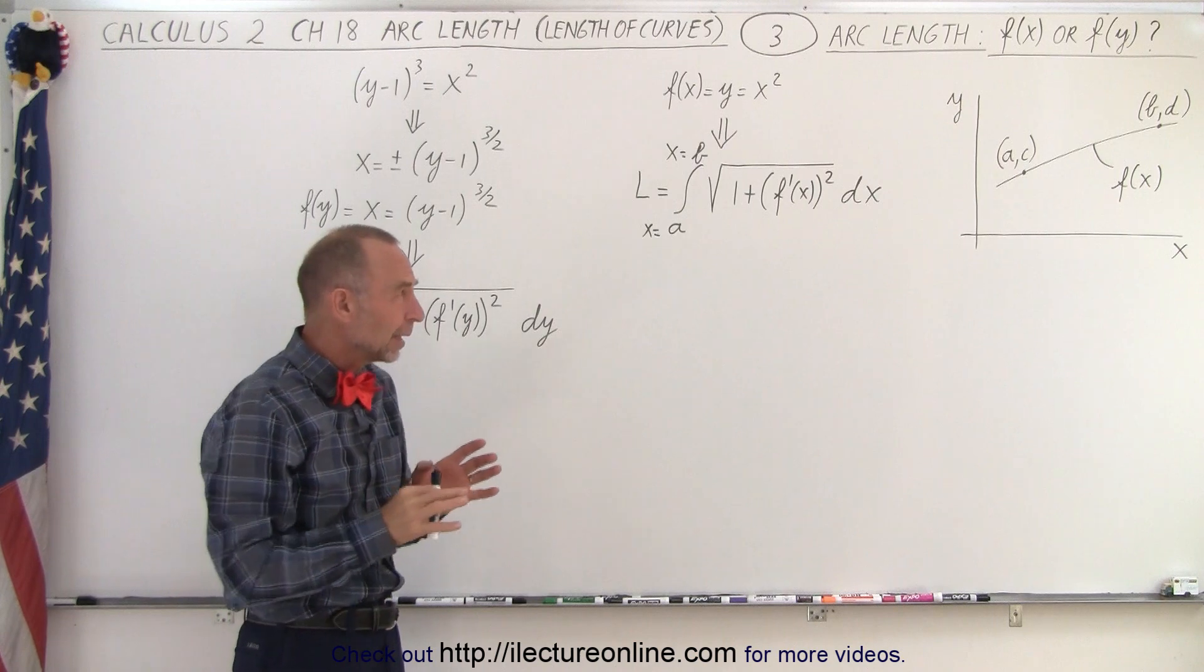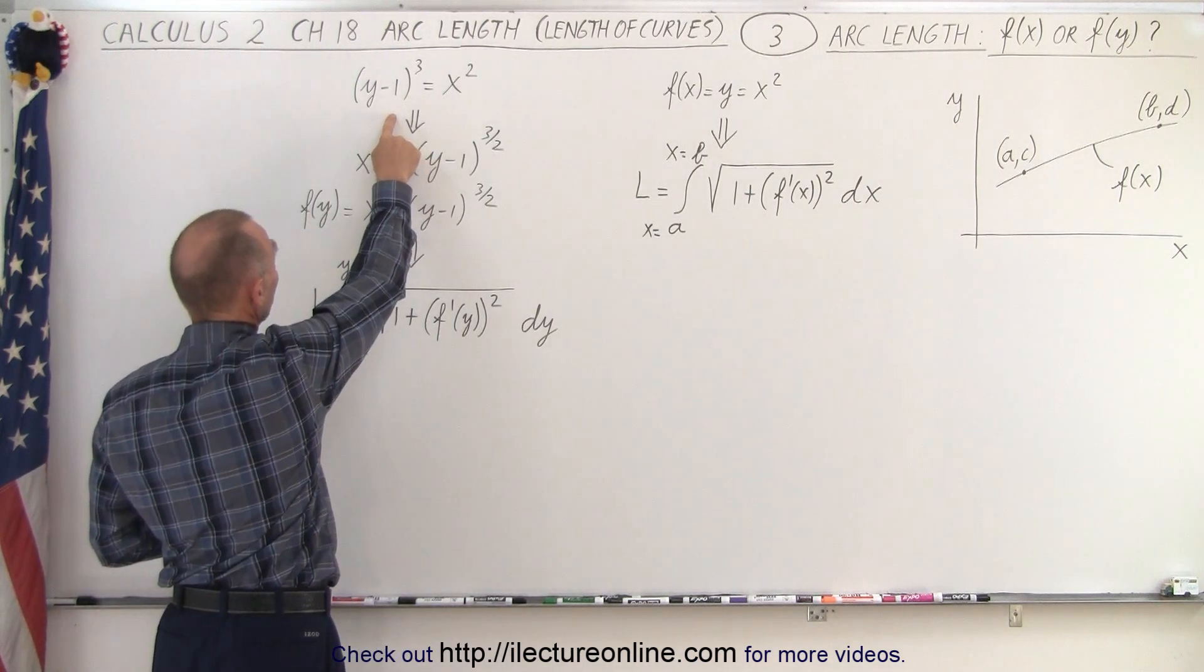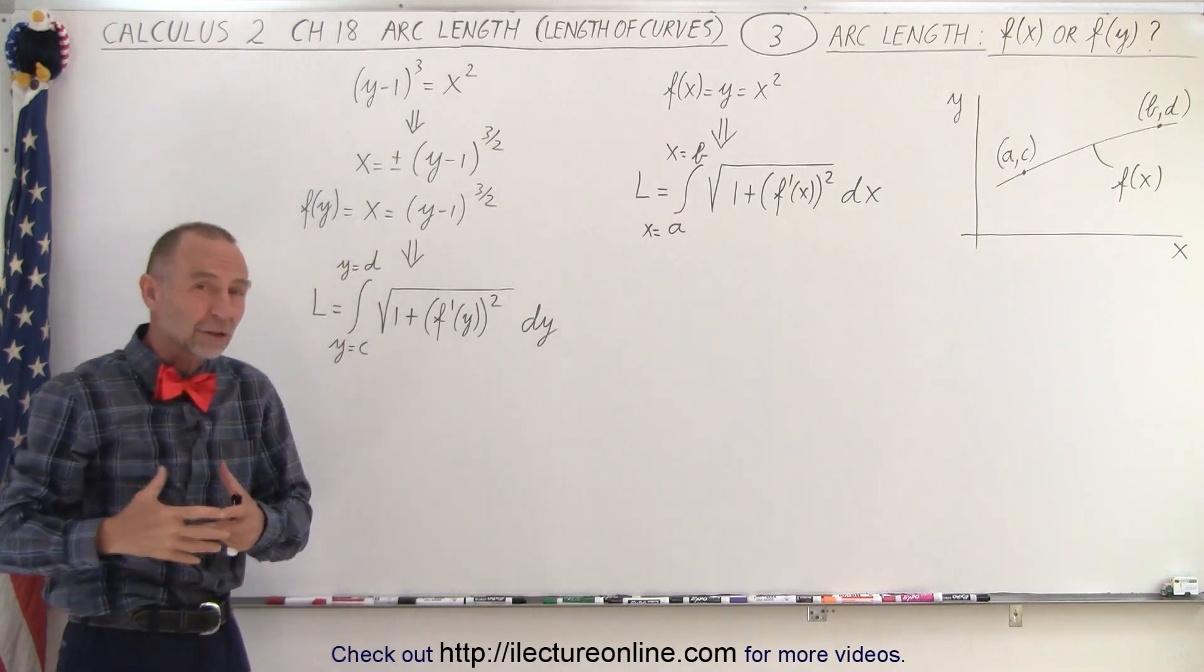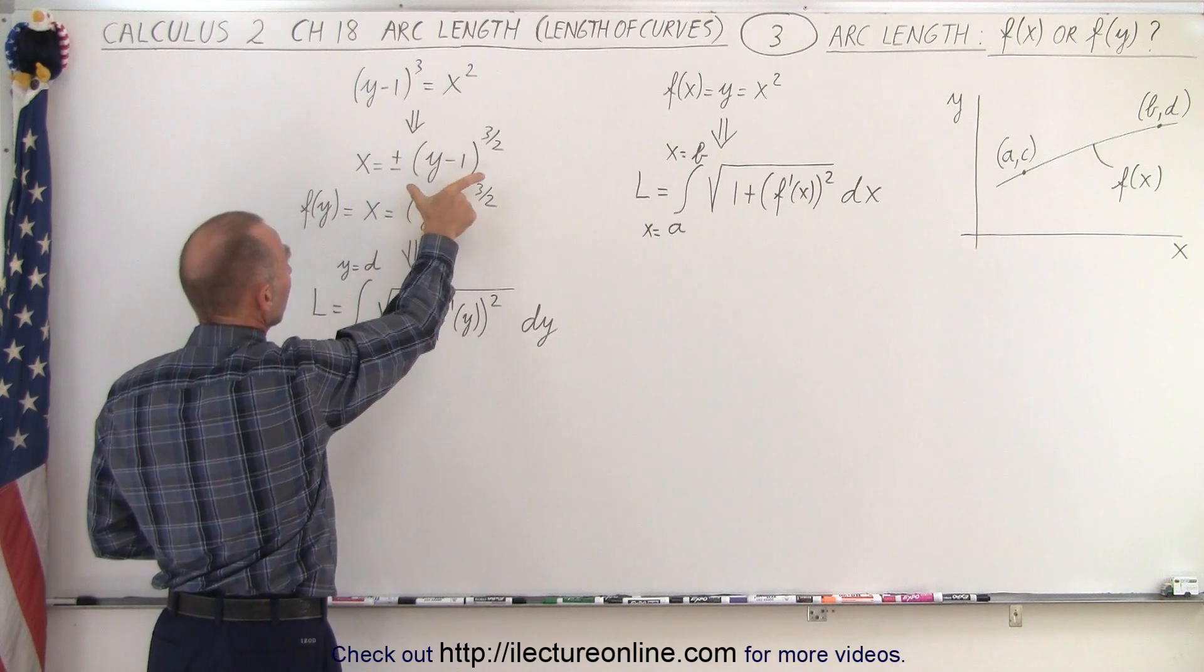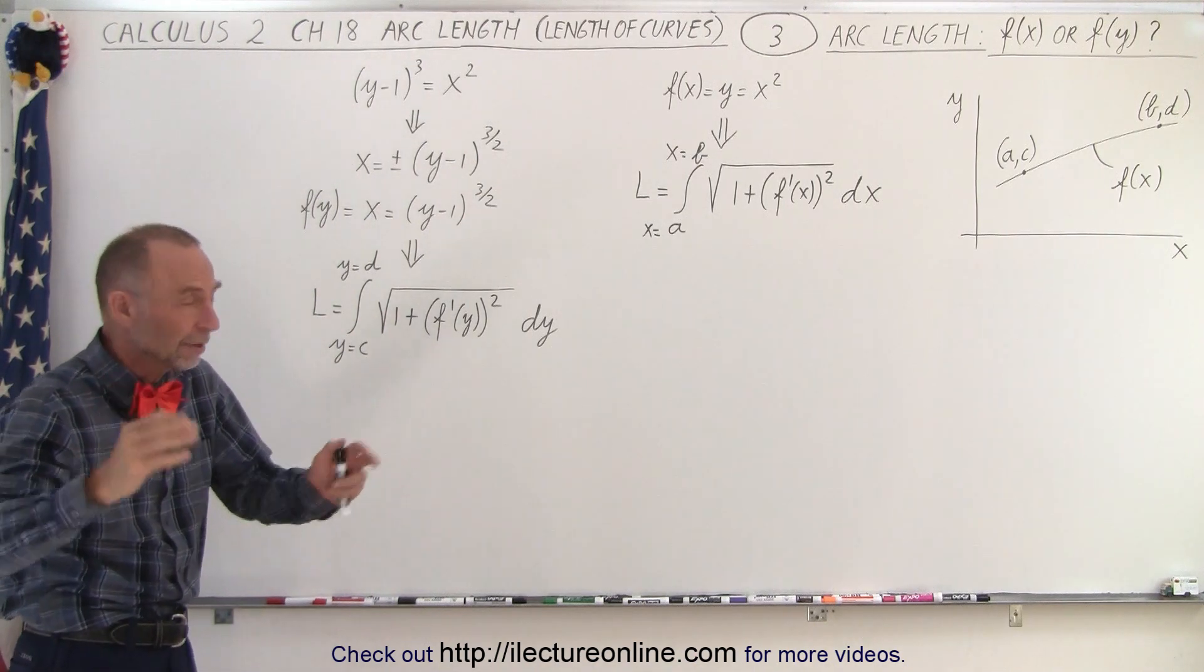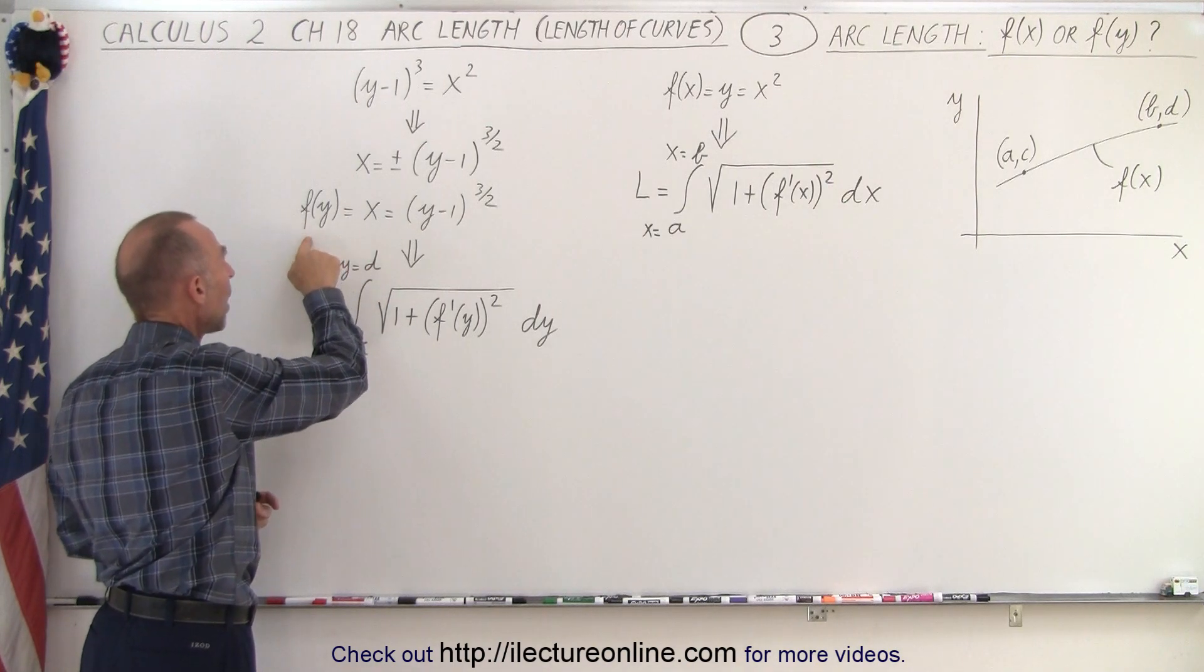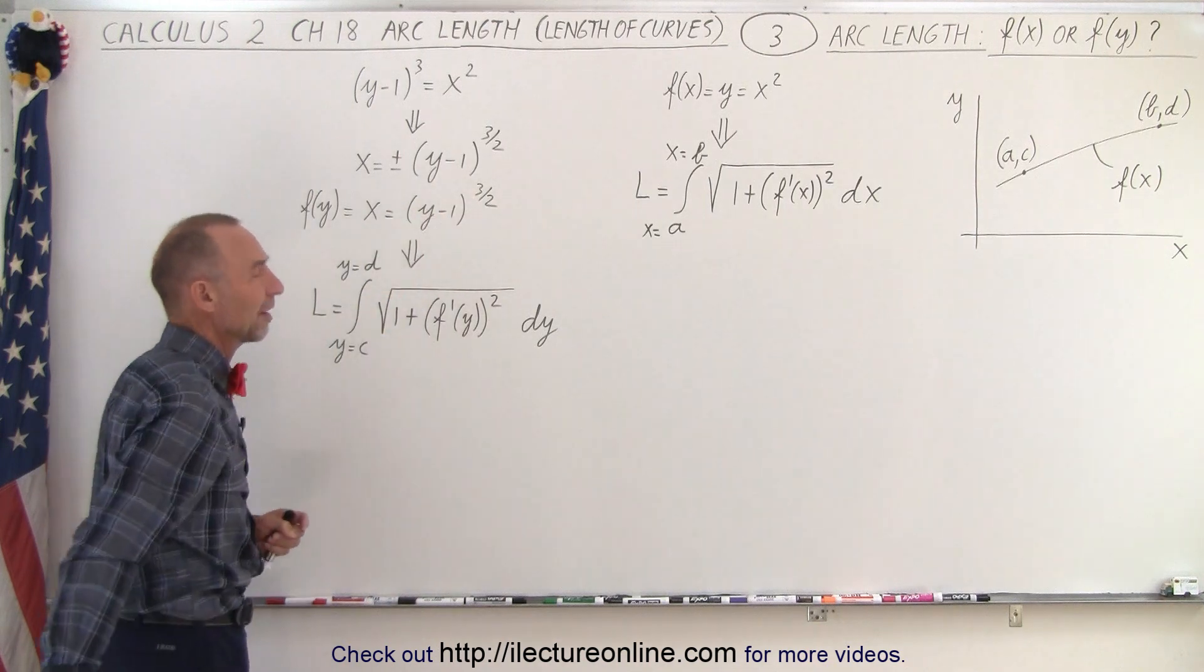But sometimes the function isn't quite like that. The function may be something like this where the quantity y minus one cubed equals x squared, and then if we take the square root of both sides we can see that x equals plus and minus y minus one to the three halves power. And then if we just take the positive side of that because that may be where we're trying to find the arc length, then notice it now becomes a function of y which is equal to x which is equal to the quantity y minus one to the three halves power.